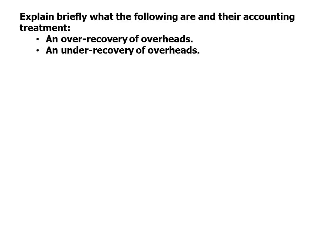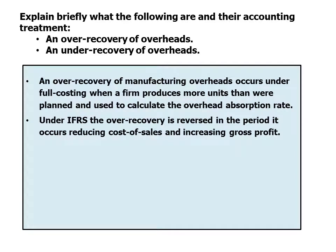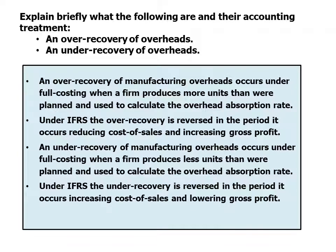Explain briefly what the following are and their accounting treatment: an over-recovery of overheads and an under-recovery of overheads. An over-recovery of manufacturing overheads occurs under full costing when a firm produces more units than were planned and used to calculate the overhead absorption rate. Under IFRS, this over-recovery is reversed in the period it occurs, which has the effect of reducing cost of sales and increasing gross profit. With under-recovery it's the opposite: it occurs when a firm produces fewer units than planned, and under IFRS the under-recovery is reversed in the period it occurs, increasing cost of sales and lowering gross profit.